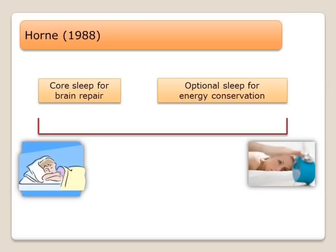Horne argues that core sleep is the first few cycles of the sleep stages, though he himself said he's not exactly sure what's being repaired because it's difficult to work out. His theory differs from strict restoration accounts because he argued that the rest of a night's sleep is optional, satisfying purely a behavioural, adaptive — so evolved — need to save energy. Horne also argued that the surge in growth hormone seen in early sleep is likely to protect tissue protein during overnight fasting, and is therefore a consequence of sleep, not the purpose of sleep.